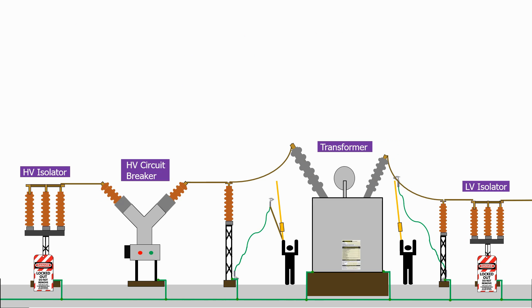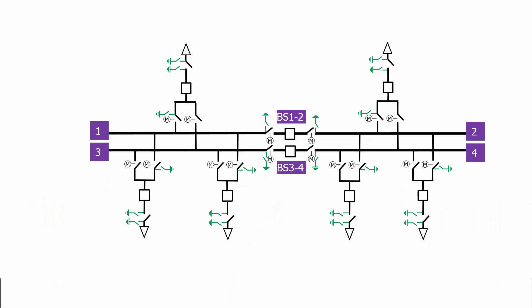We will look at how we use safety grounding equipment on a typical feeder bay. We will then look in detail at ground switches and show you where you need to position them on a typical electrical network.